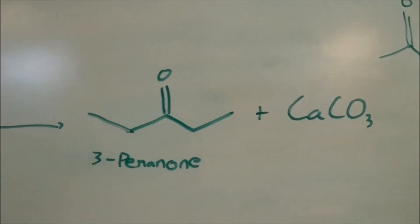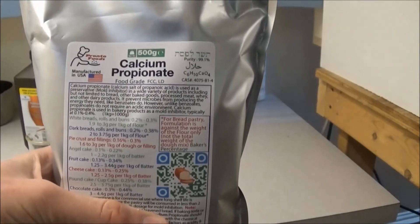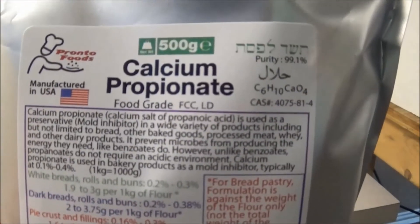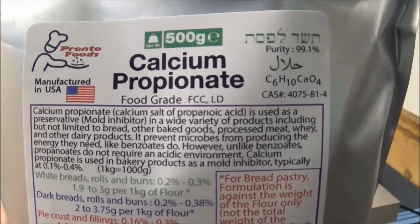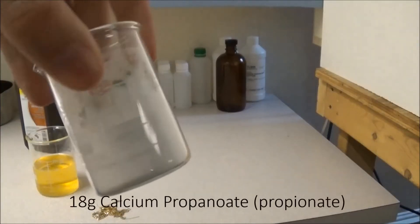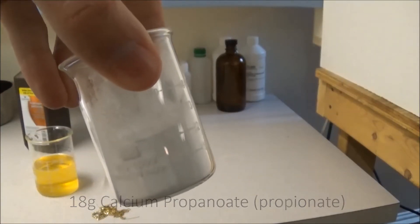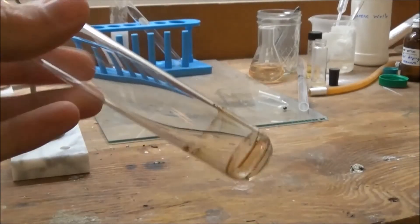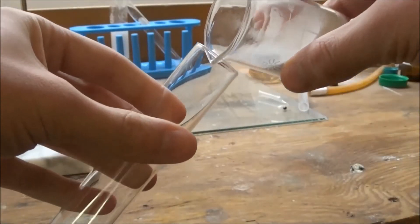I bought my calcium propanoate online as a food preservative. It is used to preserve bread. I weighed out around 18 grams and proceeded to add this to a large 50 milliliter test tube. I did this because I didn't want to damage any of my nice flasks.